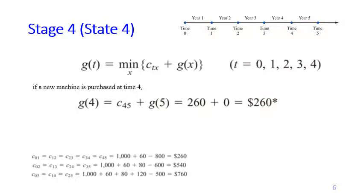Let's start with g(4), since this is the last point of time at which it is possible to buy a new machine. Time 5 is the end of the problem, so we will never buy a new machine there — thus g(5) equals 0. The only possible cost is c(4,5), so g(4) equals c(4,5) plus g(5), which equals just c(4,5), which is 260. This already includes buying a new machine, maintenance cost, and selling the one-year-old machine.